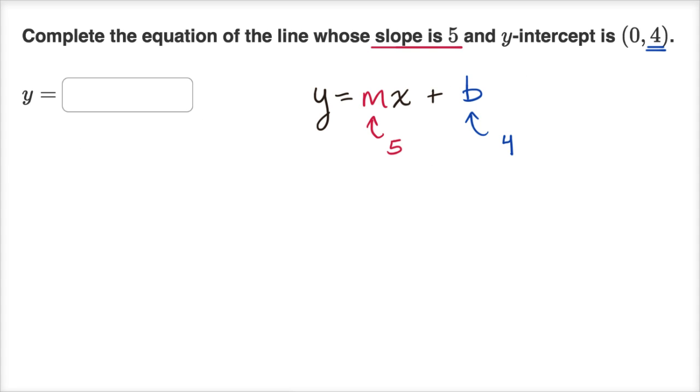So I could say y equals five times x plus four. And when you're actually entering it on Khan Academy, you would just type it in, or if you're using the app, you would use it with your finger.